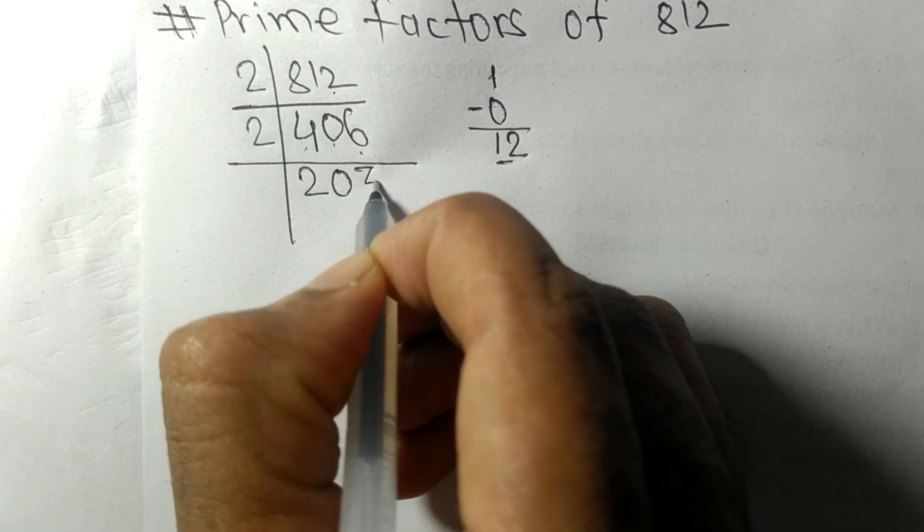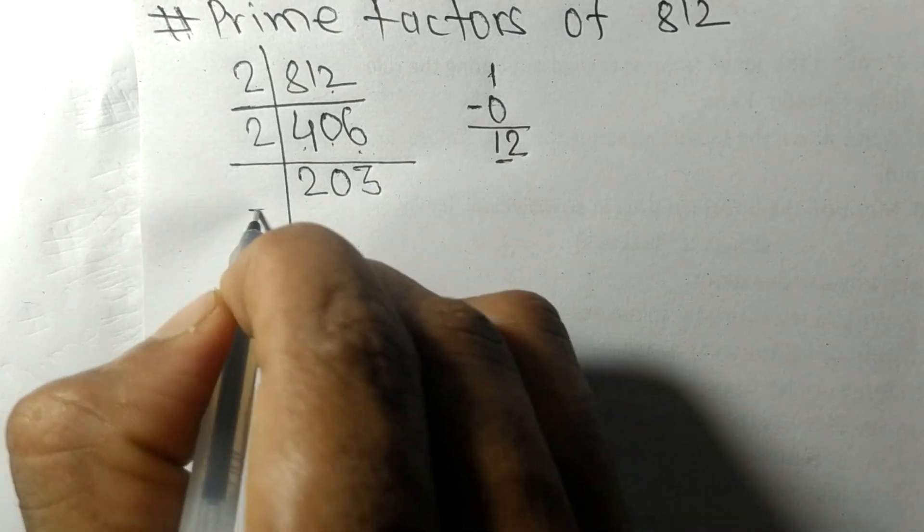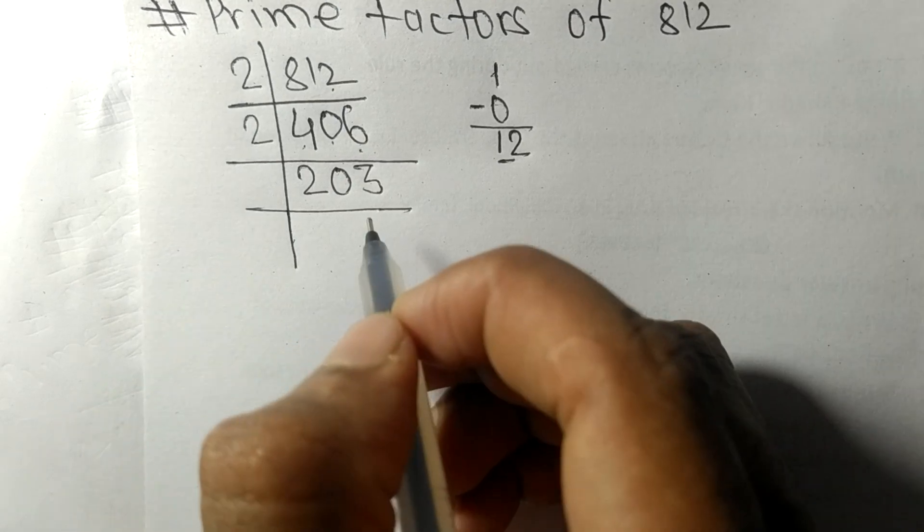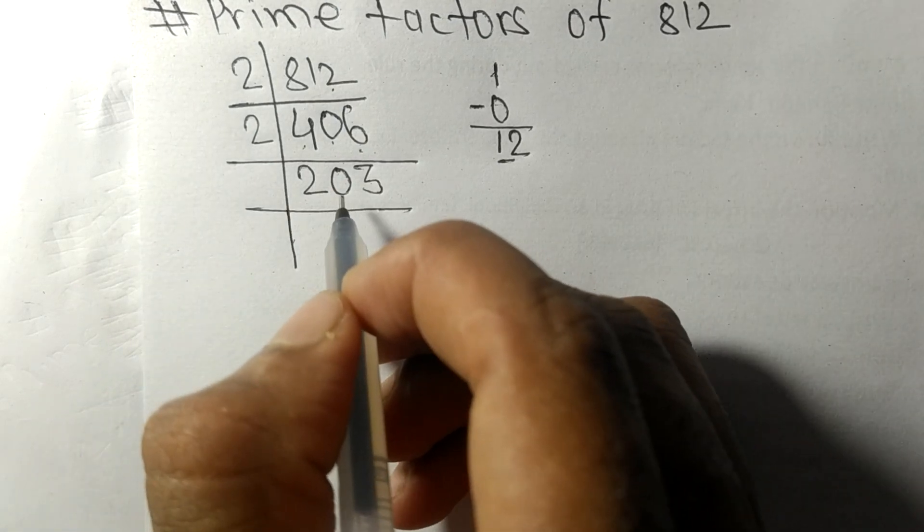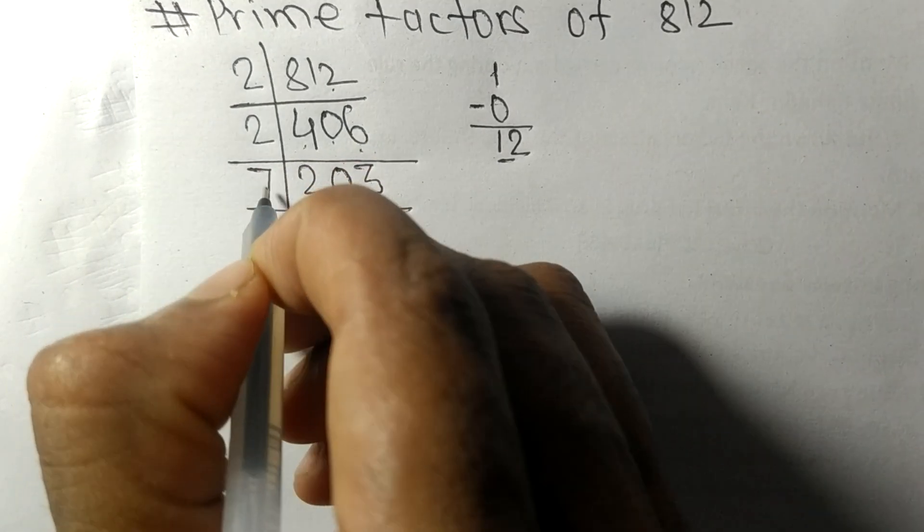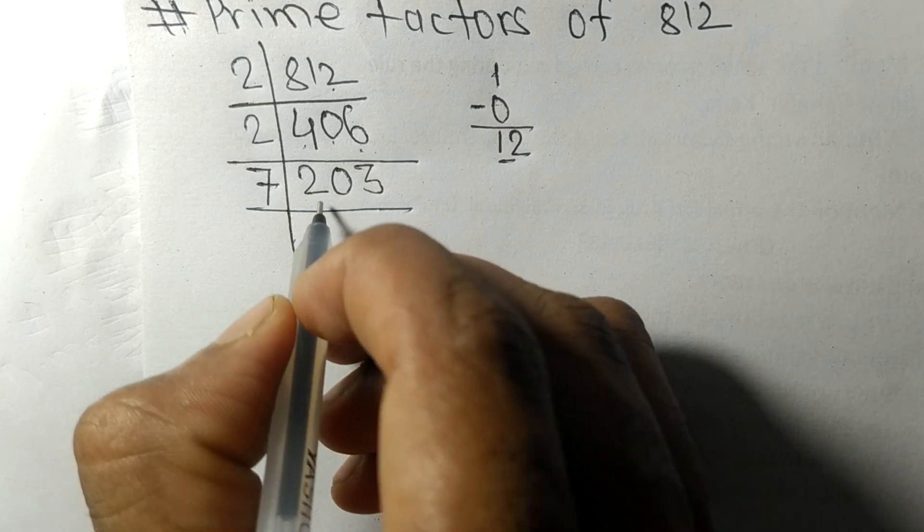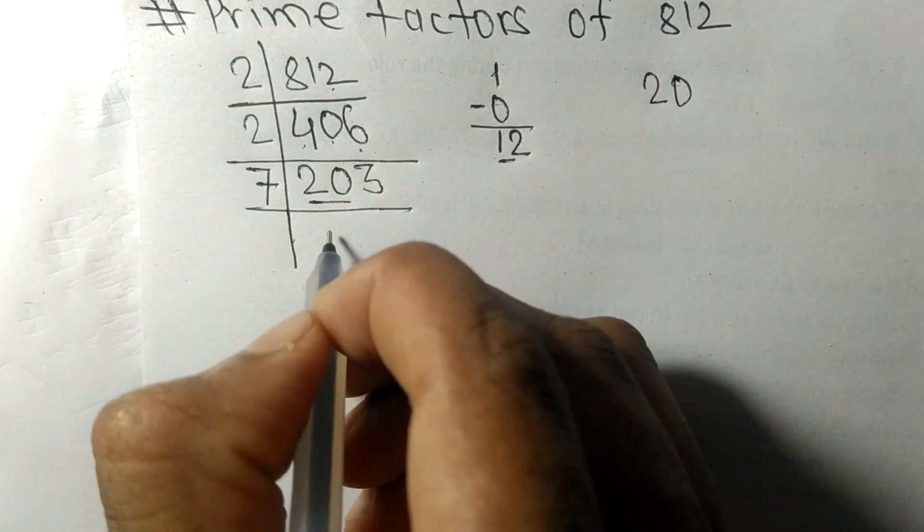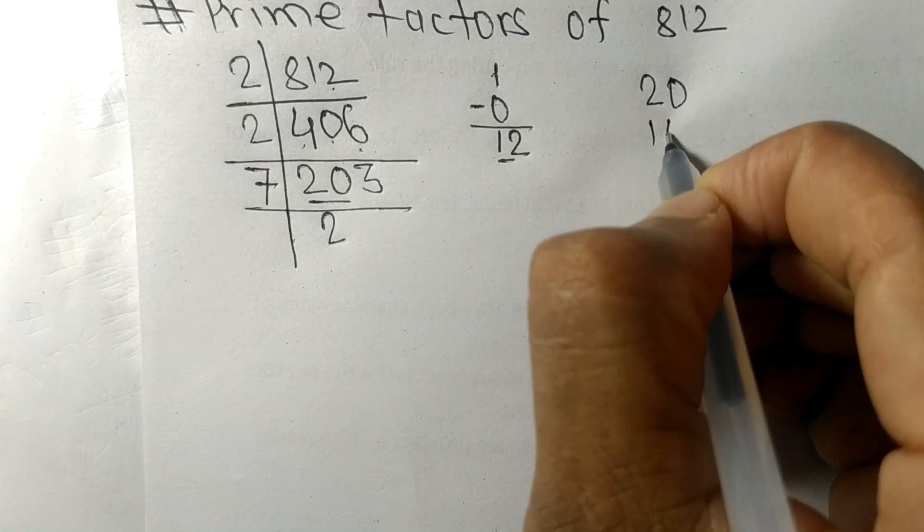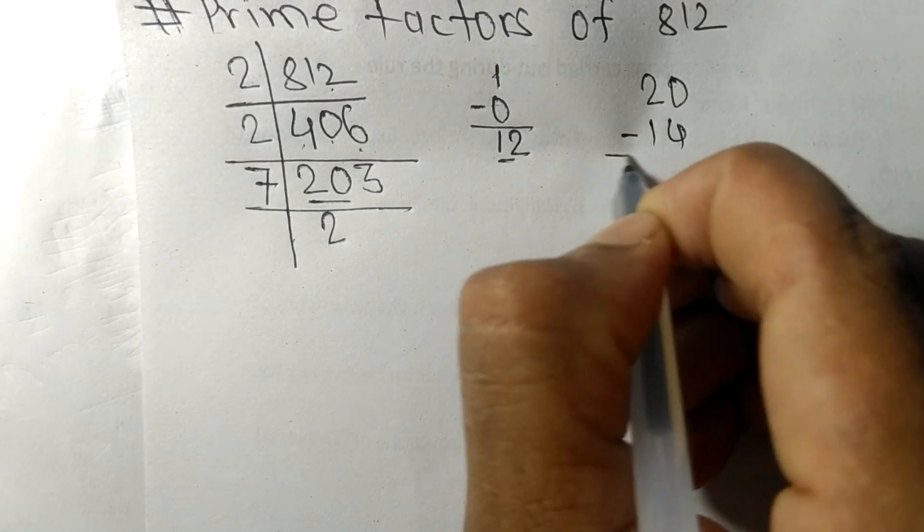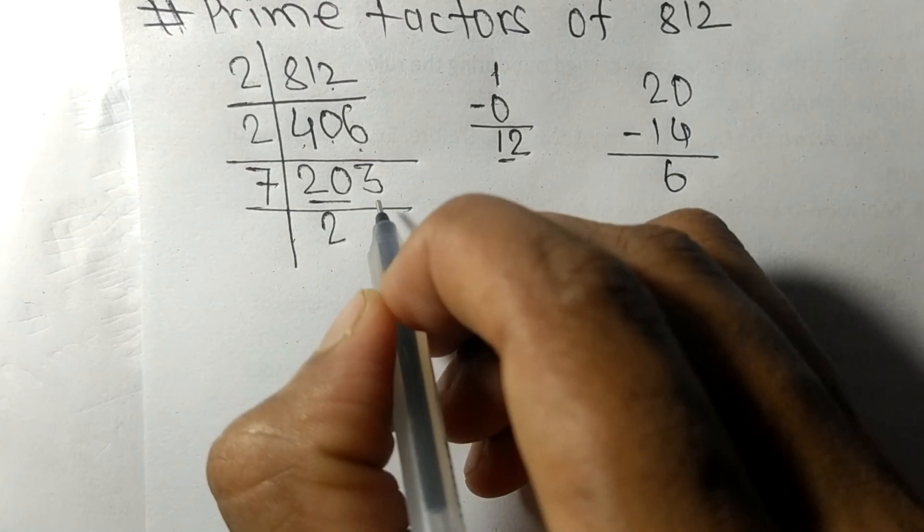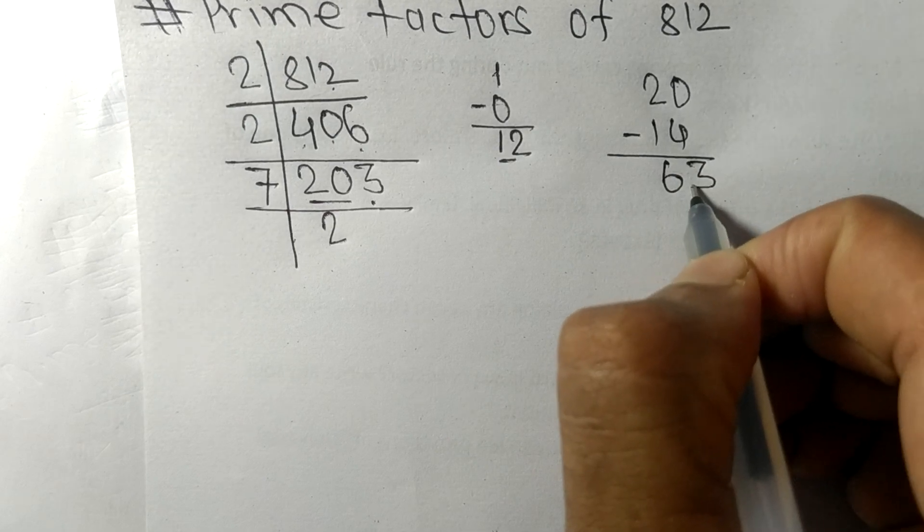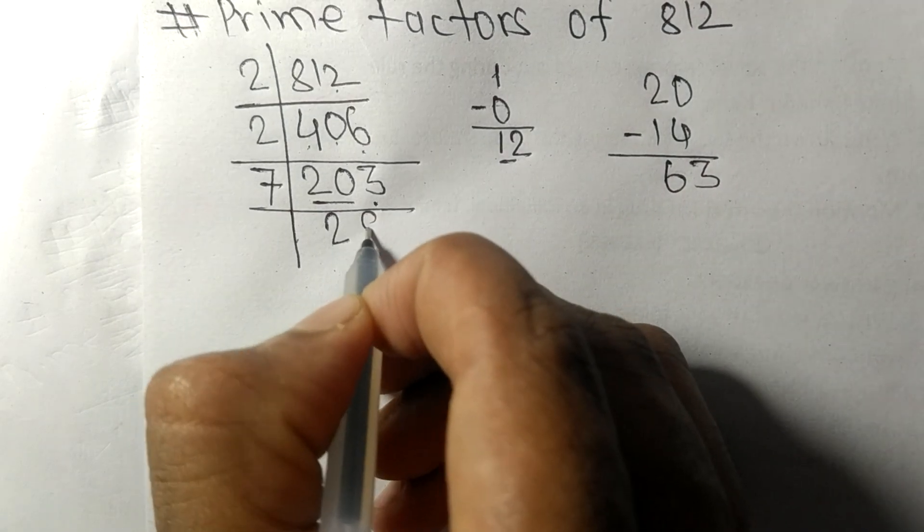First we have 20, so 7 times 2 is 14. On subtracting we get 6, and this 3 makes 63. 7 times 9 is 63. So now we got 29, which is a prime number.